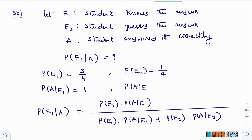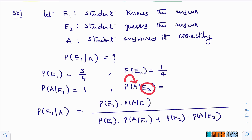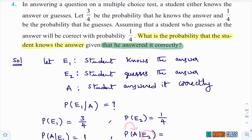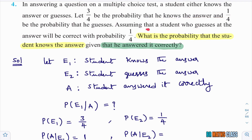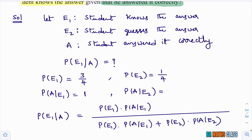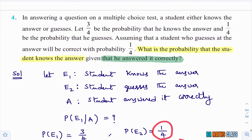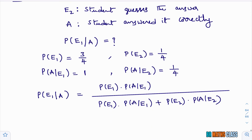Now P(A|E2): the student guesses the answer. E2 is the event that the student guesses. What is the probability that the guess is correct? From the question: assuming that a student who guesses at the answer will be correct with probability 1/4. So P(A|E2) = 1/4. Note that this 1/4 is different from the earlier 1/4 (which was P(E2)).